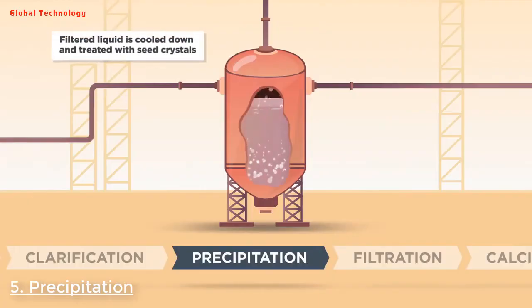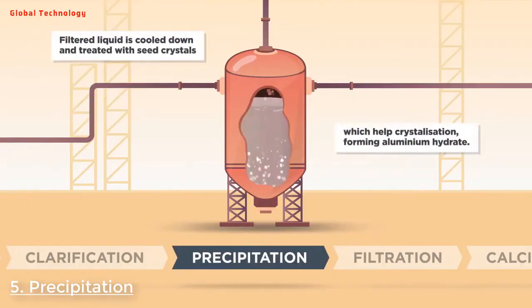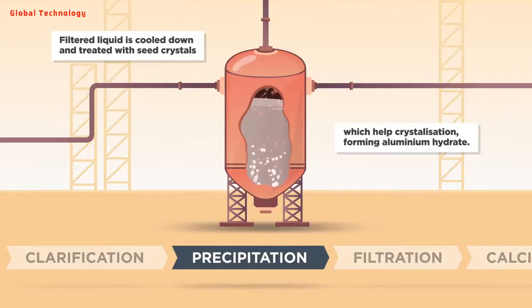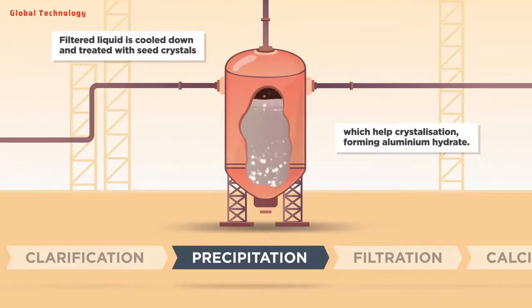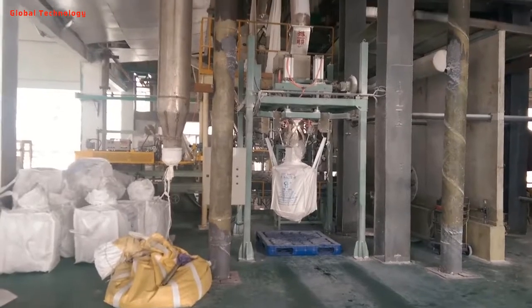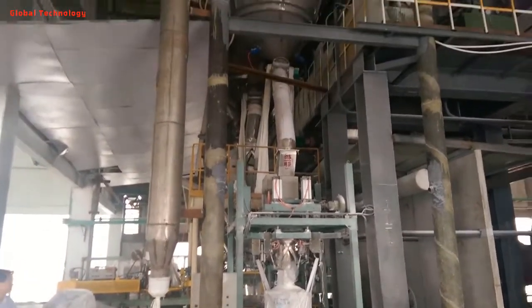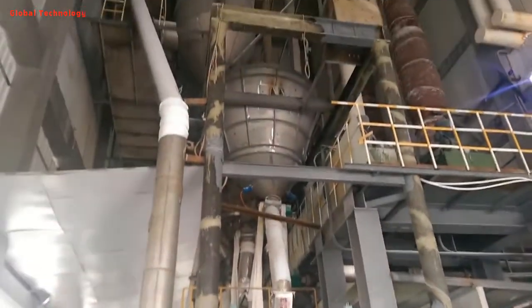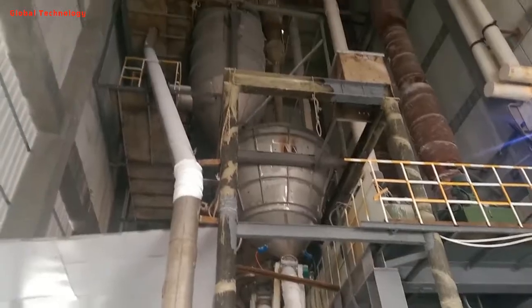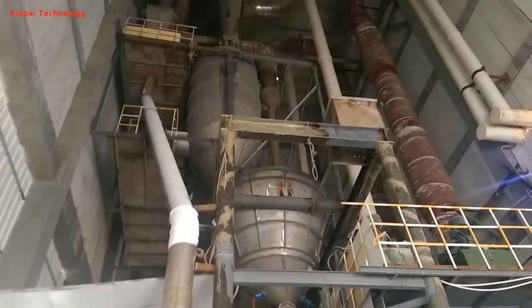Step 5 - Precipitation: The sodium aluminate solution is then cooled and pumped into large precipitators, sometimes as tall as a six-story building. Aluminium hydroxide seed crystals are added to the solution to start the precipitation process. At this point, large aluminium crystals are formed.